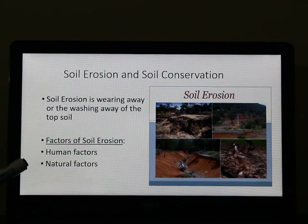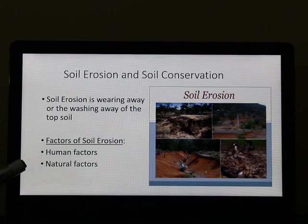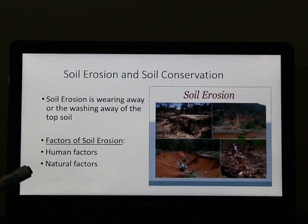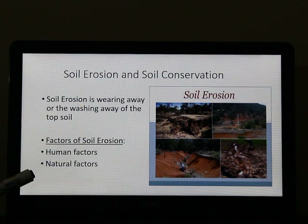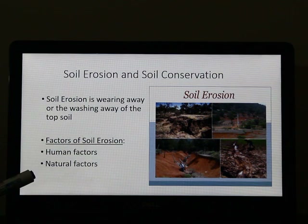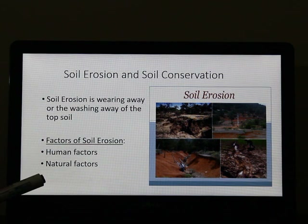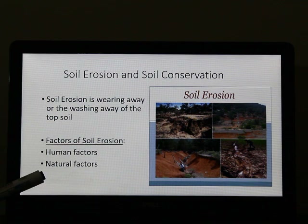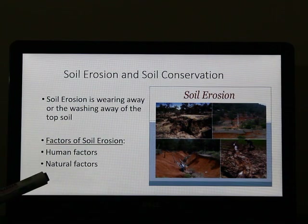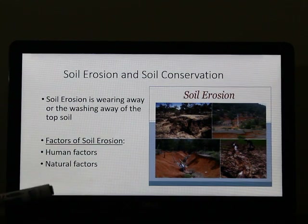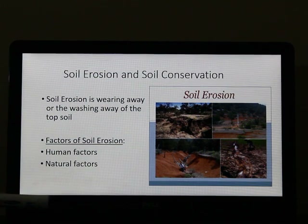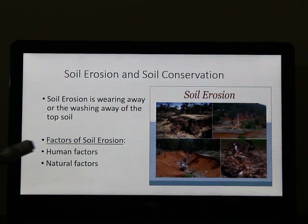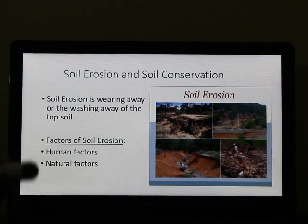The second factor which causes soil erosion is the natural factor, which involves wind, glacier, or water. When a glacier moves, it carries a huge amount of top soil and causes land erosion. Similarly, when it rains heavily, the top soil washes away with the water. Wind is also one of the causes of soil erosion, which is very common in desert areas. The picture here shows all the different types of soil erosion.